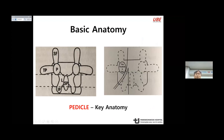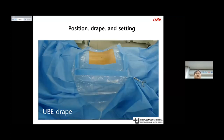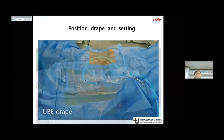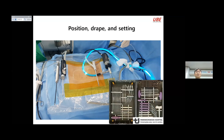As you know, the pedicle is the key anatomy of spinal surgery. I would like to answer that this is the endoscopic solution for spinal stenosis. UV can be performed under general or epidural anesthesia with the patient in the prone position. For the equipment, a 0-degree endoscope, RF device, irrigation system, and surgical tools specific to the UV system should be prepared.